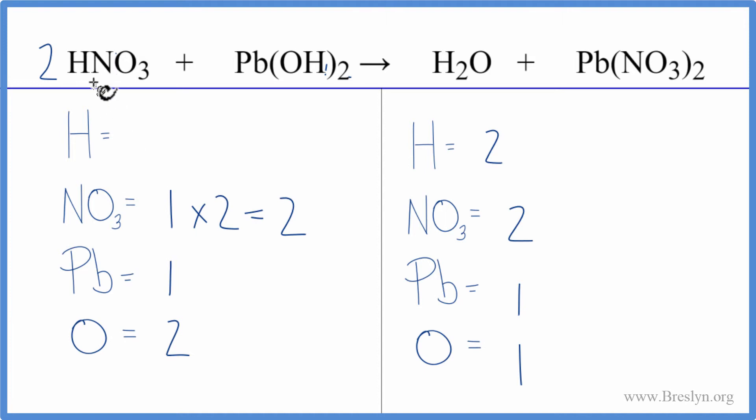We have one times two, two hydrogens, plus one times the two. That gives us a total of four hydrogens. That's an even number, which is helpful.